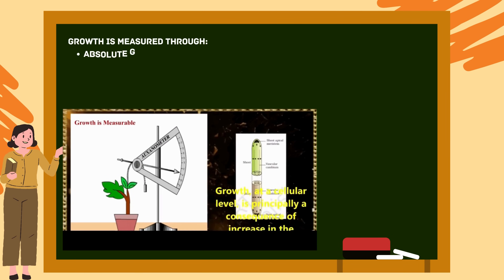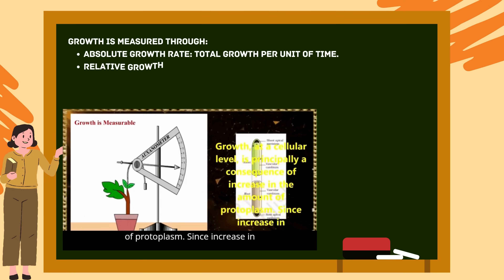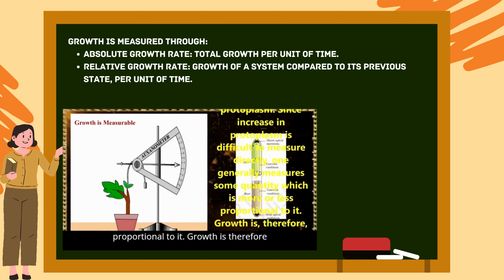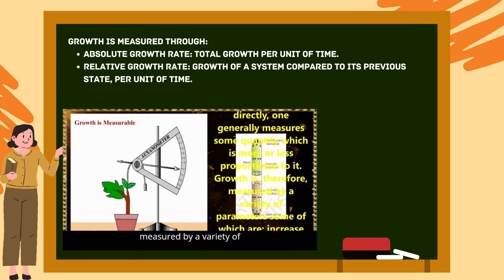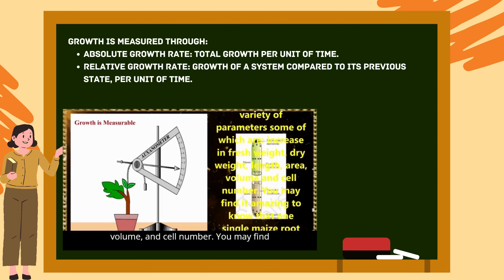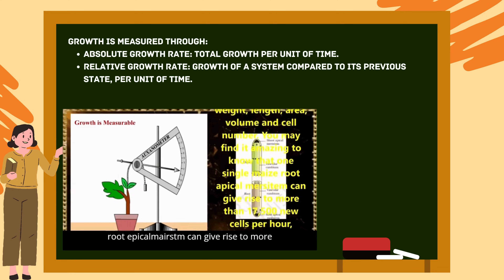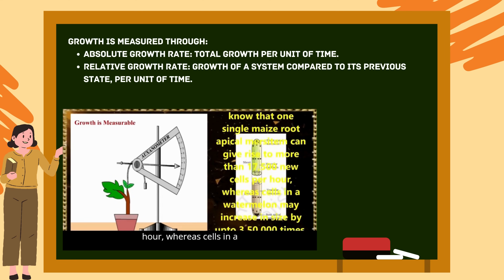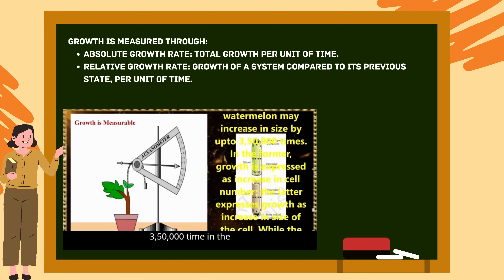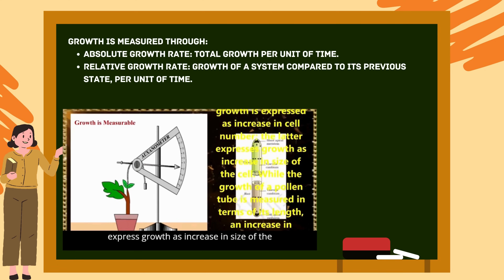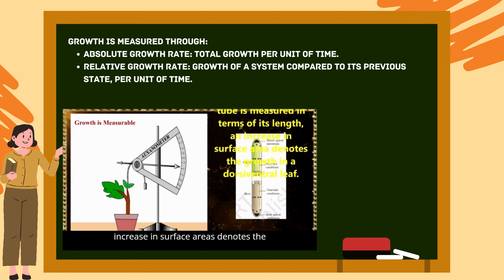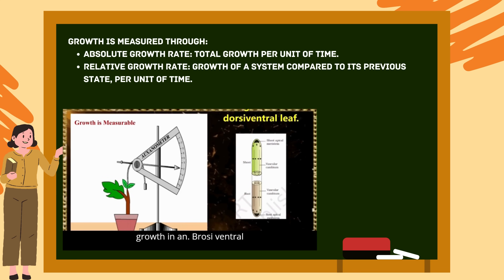Growth at the cellular level is principally a consequence of increase in the amount of protoplasm. Since increase in protoplasm is difficult to measure directly, one generally measures some quantity more or less proportional to it, such as fresh weight, dry weight, length, area, volume, and cell number. One single maize root apical meristem can give rise to more than 17,500 new cells per hour, whereas cells in a watermelon may increase in size up to 3,50,000 times. Growth can be expressed as an increase in cell number or an increase in size of the cell.